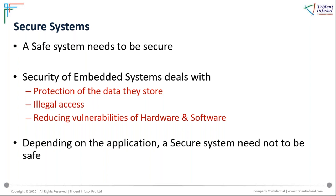There is a linkage between security and safety. A safe system needs to be secure—security means the system should not be hackable, should protect data from illegal access, and should not allow hardware damage. So a safe system must first be secure. However, a secure system need not necessarily be safe; it depends on the application and whether safety is a major concern for that deployment.